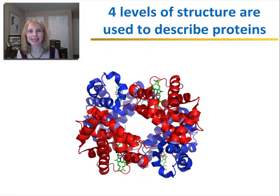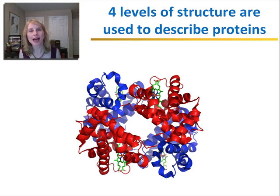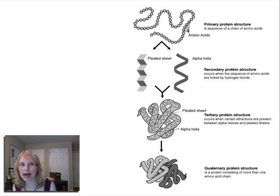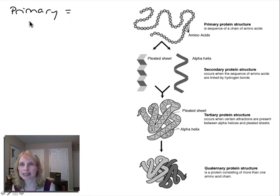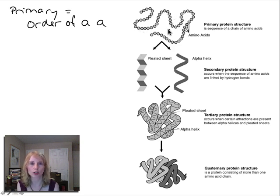Once a polypeptide chain is made, it takes on a very complex shape to become a protein, such as the one you see in this picture. To describe all of these complex shapes, biologists use what are called four levels of protein structure, as shown in this diagram. First, we have the primary protein structure, which is simply the order — or sequence — of amino acids that make up the polypeptide chain. It's not really a structure, just a sequence.